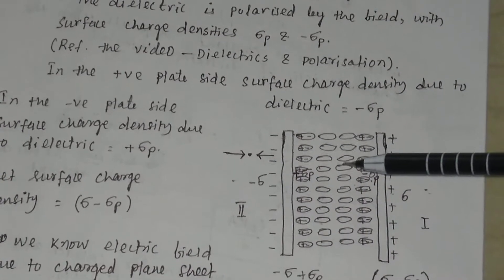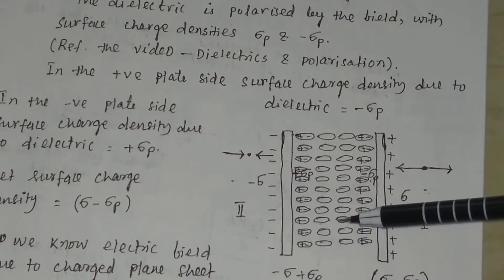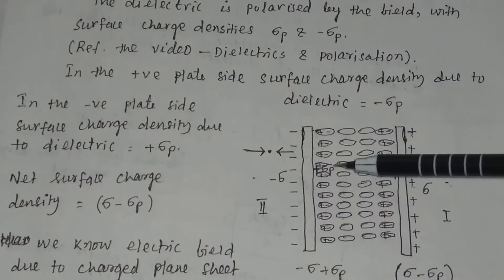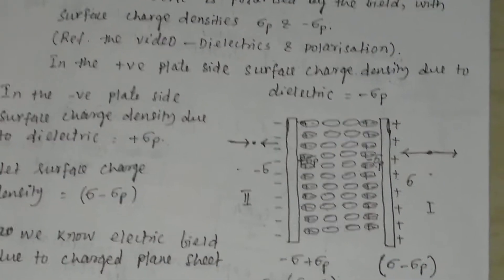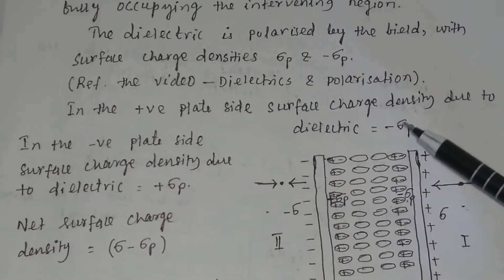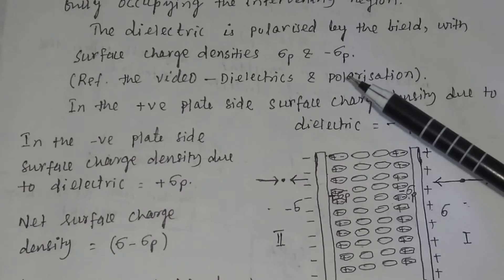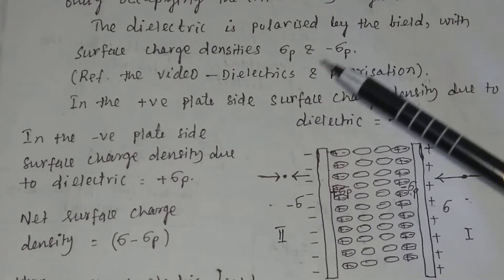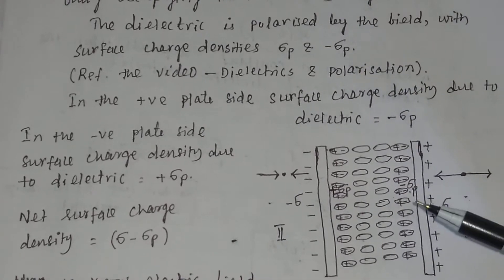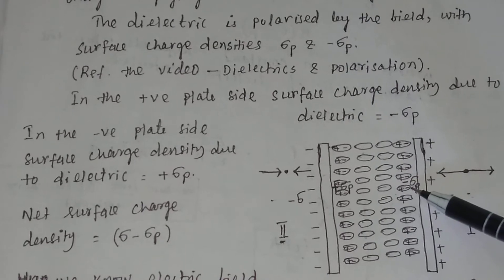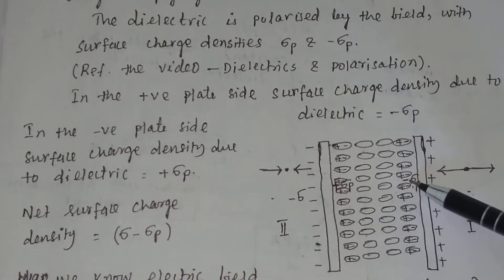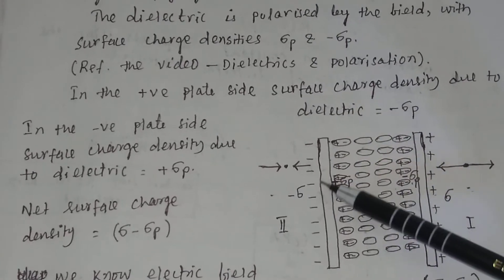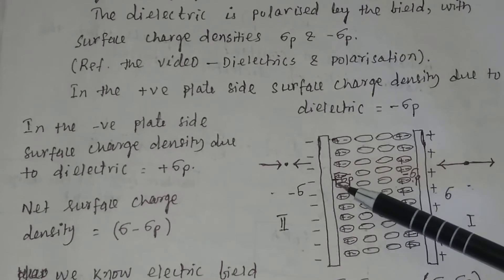The dielectric is polarized by the external field. Suppose you apply an external field E0, as a result of which the dielectric will be polarized. To know how a dielectric is polarized in the presence of an electric field, refer the video on dielectrics and polarization. By the application of the field, the surface charge density is sigma p and minus sigma p. On the side of the positive charge plate, the surface charge density due to polarization is minus sigma p, and on the negatively charged plate, the surface density of charge is plus sigma p.